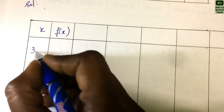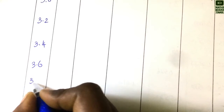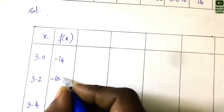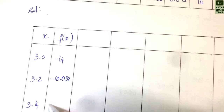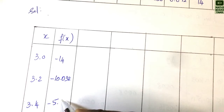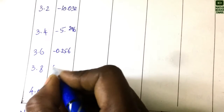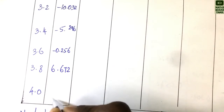The x values are: 3.0, 3.2, 3.4, 3.6, 3.8, 4.0. The corresponding F(x) values are: −14, −10.032, −5.296, −0.256, 6.672, 14.